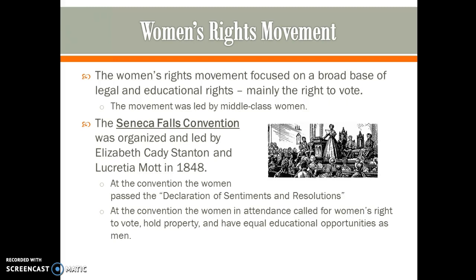The women's rights movement focused on a broad base of legal and educational rights, but mainly on the right to vote. The movement was largely led by middle-class women, who tended to be more educated. The Seneca Falls Convention was organized and led by Elizabeth Cady Stanton and Lucretia Mott in 1848. At the convention, the women passed the Declaration of Sentiments and Resolutions, which lined up with the Declaration of Independence in listing grievances against men. They called for women's right to vote, hold property, and have equal educational rights. Traditionally, women could not vote, any property they held technically belonged to their husband, father, or closest male relative, and women did not attend college or receive formal education.